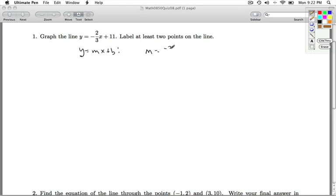The m here is negative 2 thirds and the b here is 11. Now the b corresponds to the y-intercept, so that tells us that on our line, up here we have the point 0 comma 11.